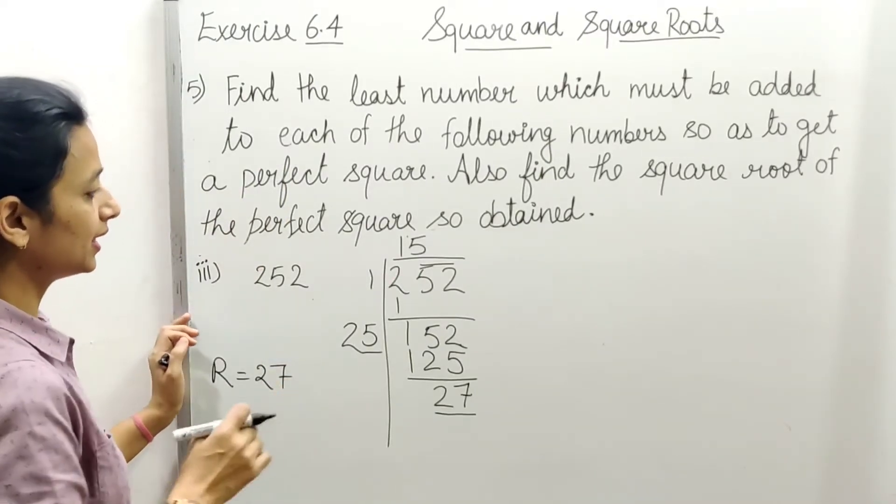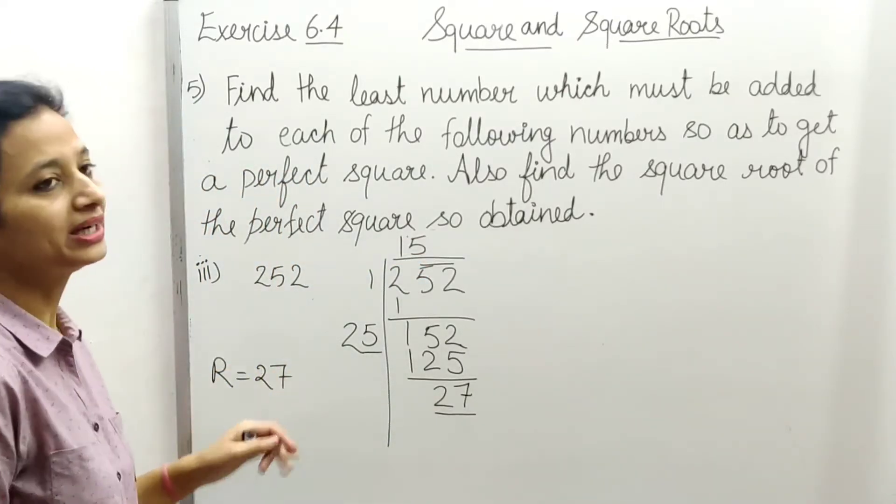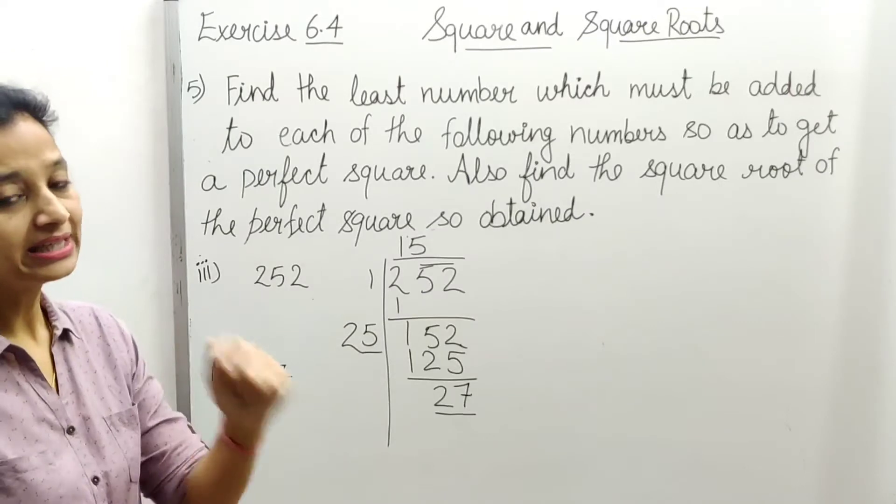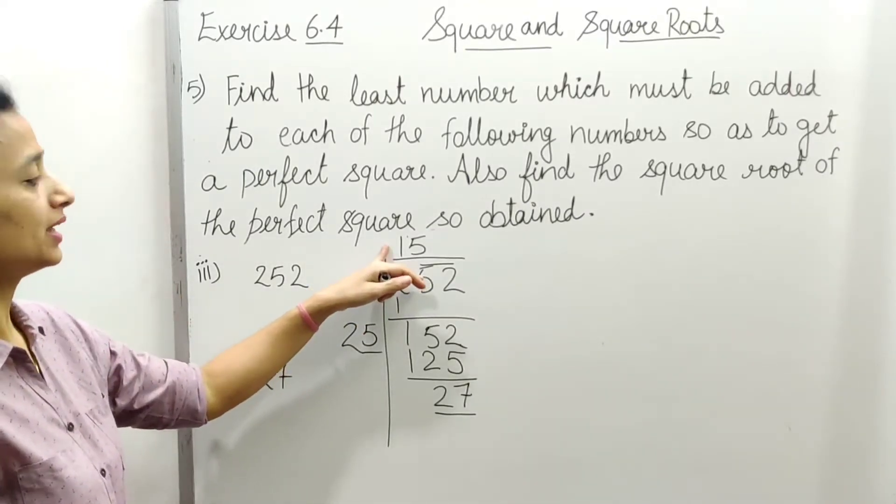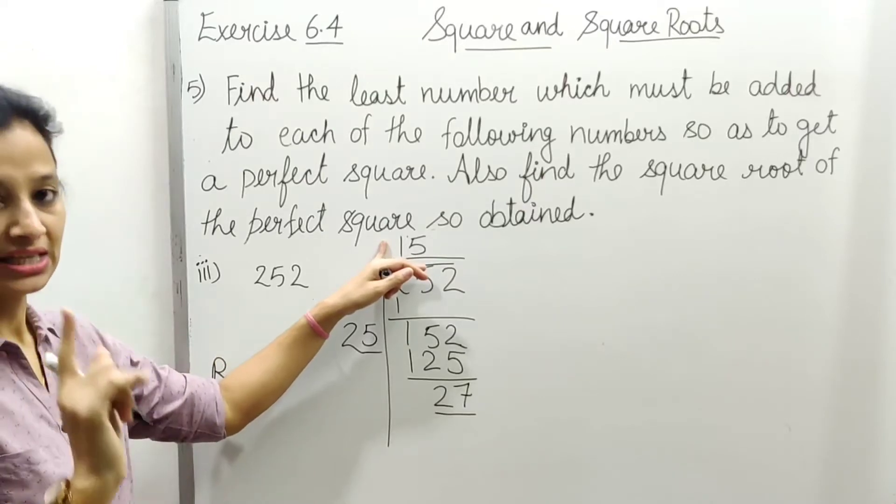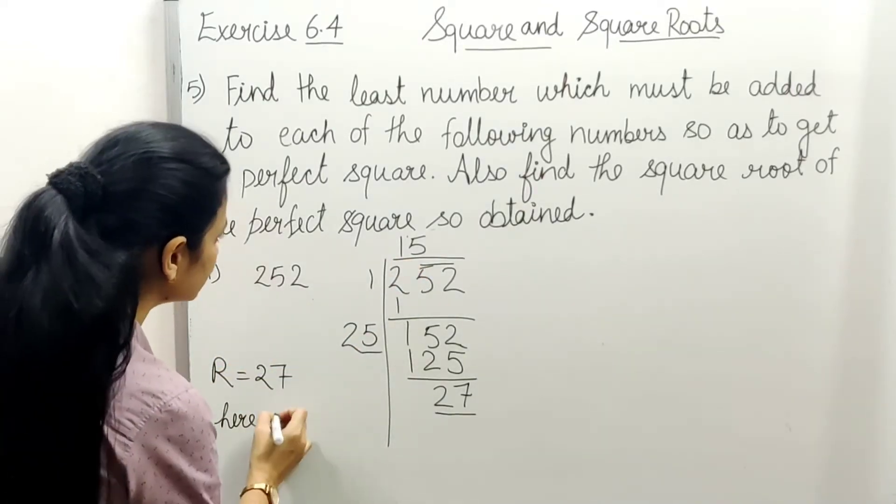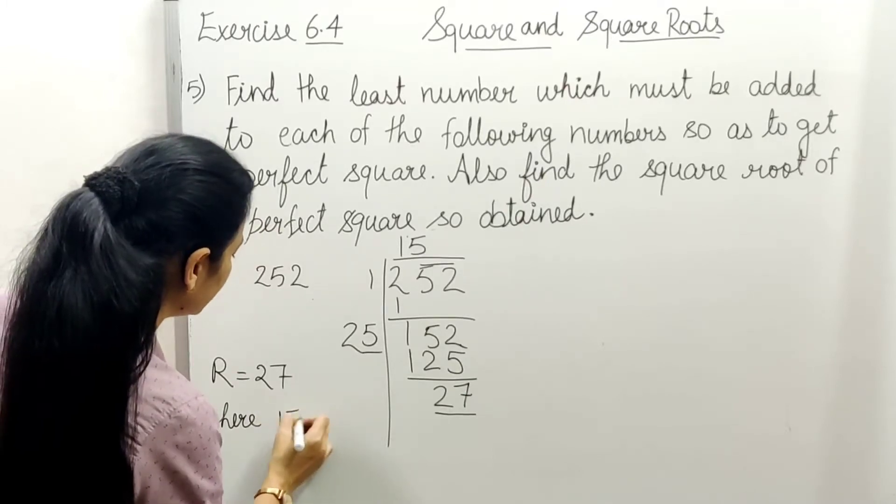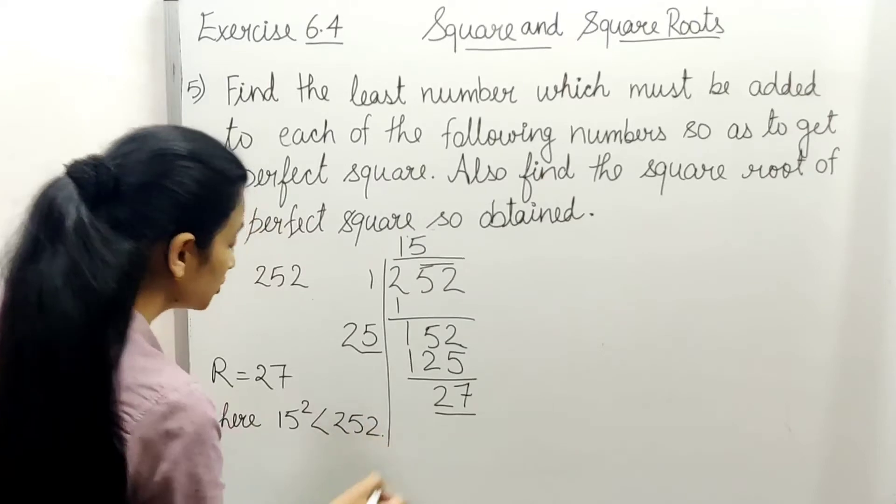This shows that 15 squared is 27 less than this. Therefore, we'll find the new number: next number will be 16. And square of 16 is 256.